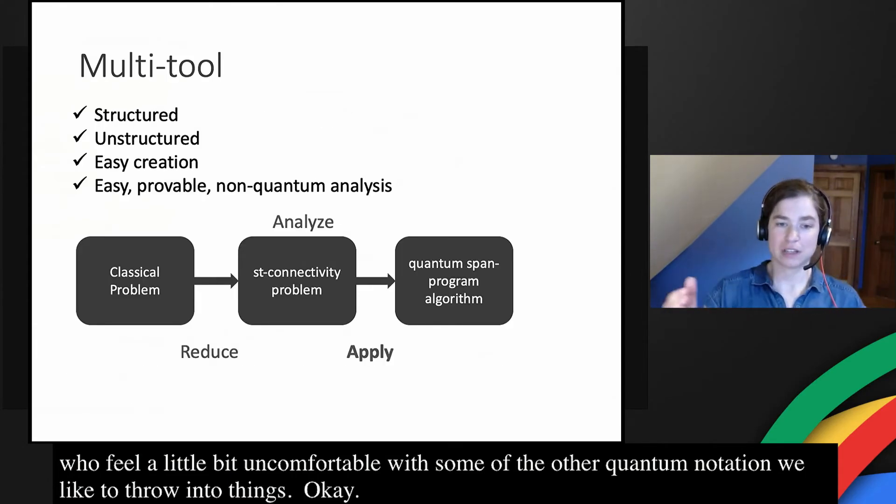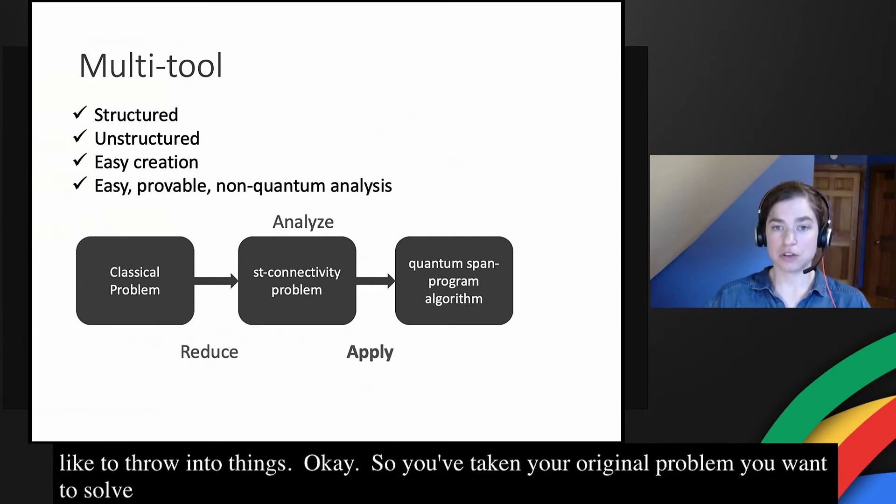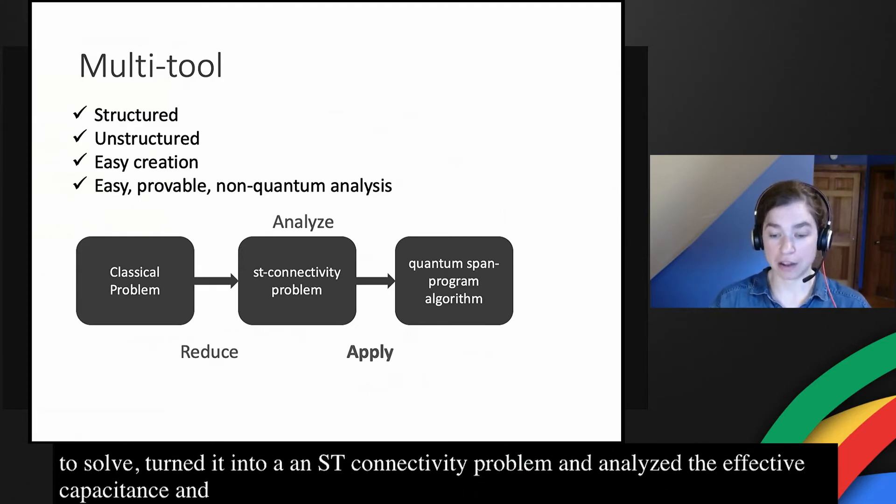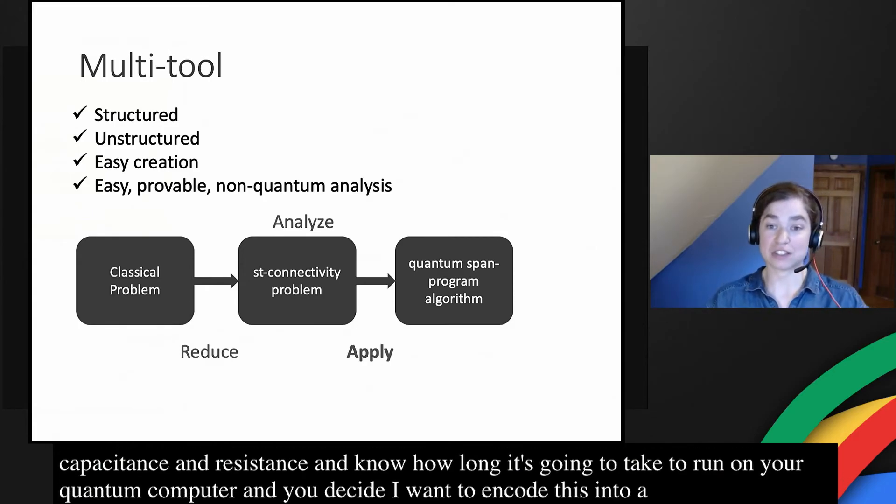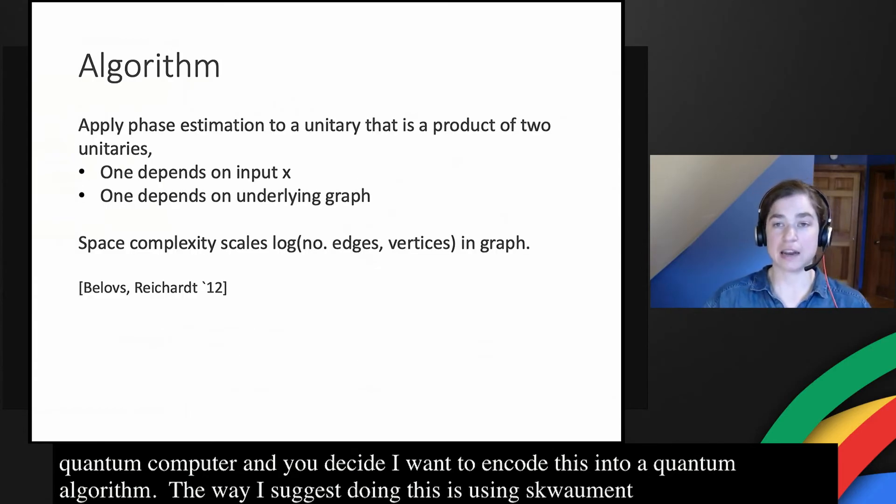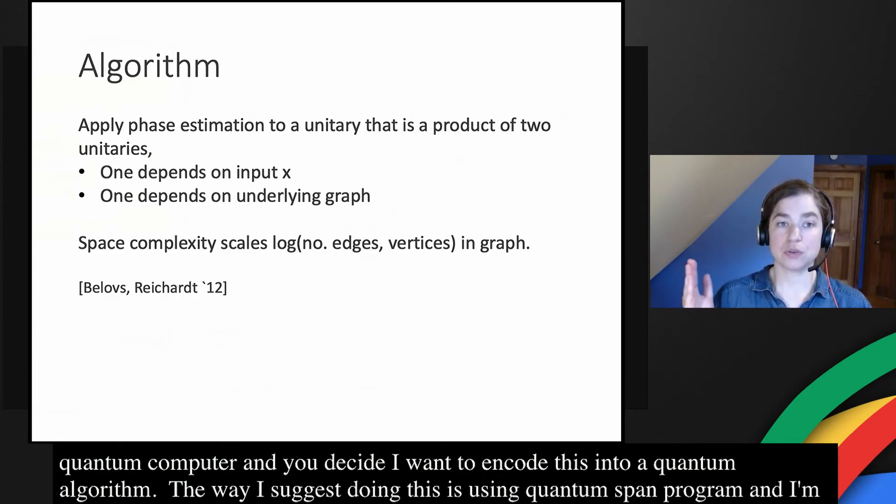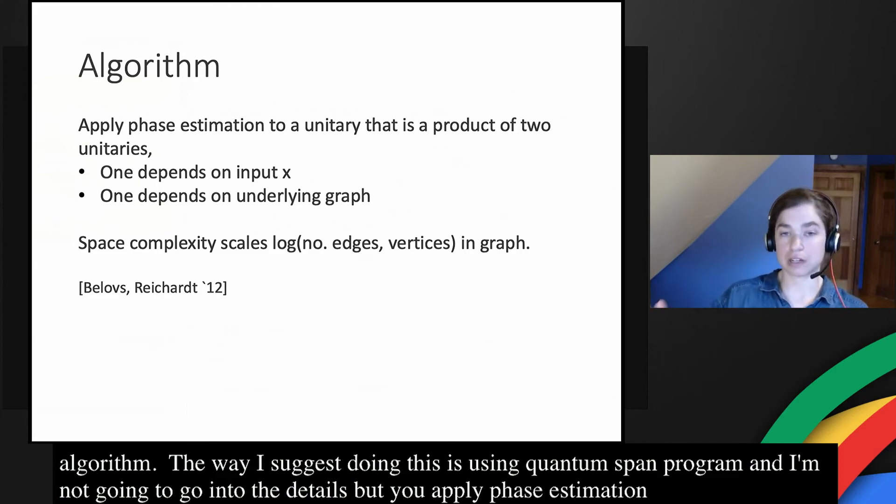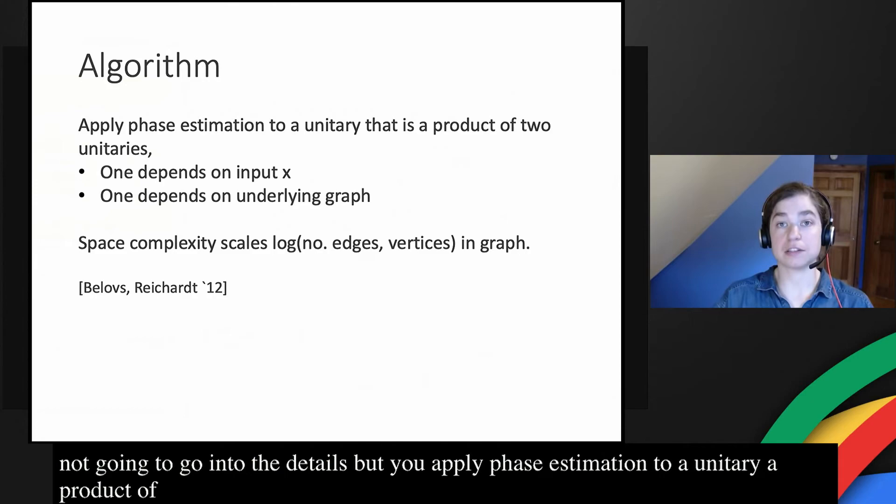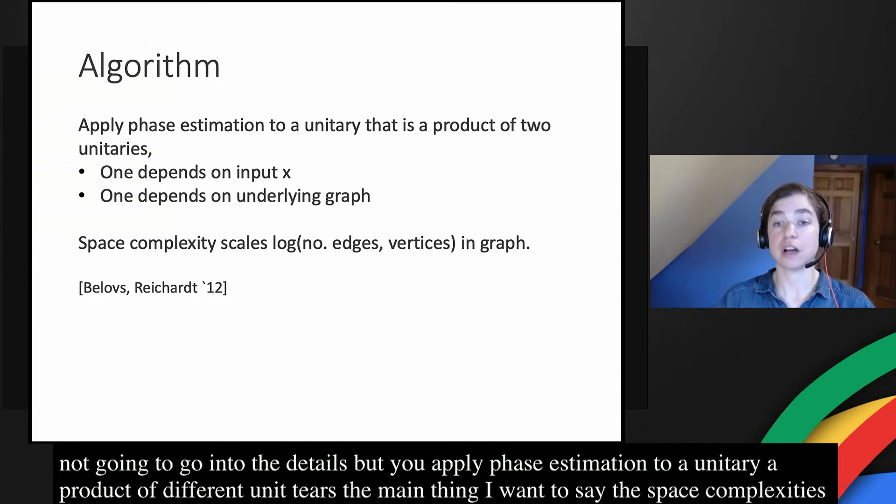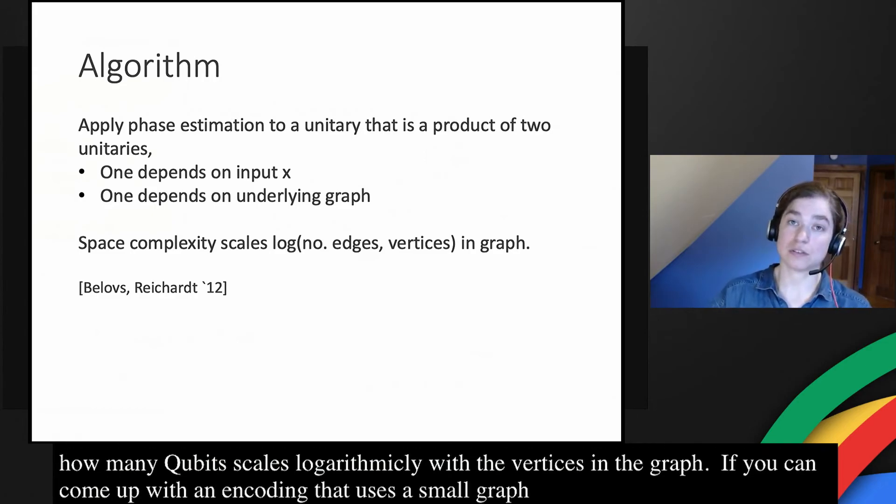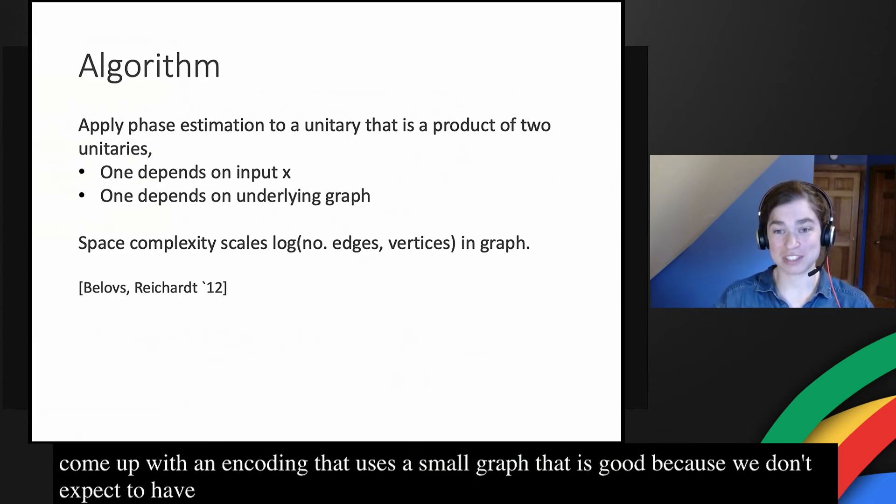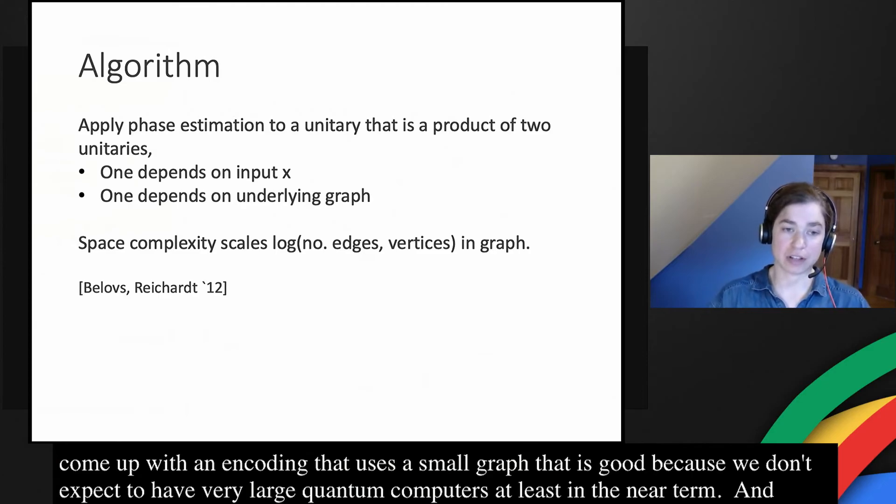So you've taken your original problem that you want to solve, you've turned it into an ST connectivity problem, you've analyzed the effective capacitance and effective resistance, and that has given you bounds on how long it's going to take to run on your quantum computer, and now you've decided it's worth it, and I want to encode this into a quantum algorithm. I suggest doing this using this quantum span program algorithm for ST connectivity, and I'm not going to go into the details because we don't have enough time. You apply phase estimation to a unitary that's a product of two different unitaries. The main thing that I want to say is that the space complexity, how many qubits you actually need to run this algorithm scales logarithmically with a number of edges and vertices in the graph. So that's why if you can come up with an encoding that uses a small graph, that is good because we don't expect to have very large quantum computers, at least in the near term. This algorithm was originally developed by Belovs and Reichardt.